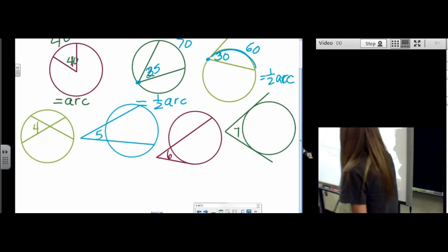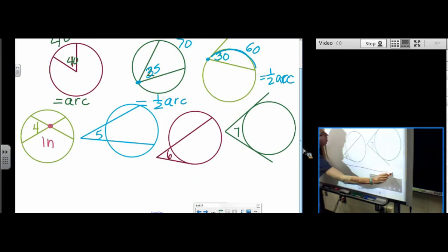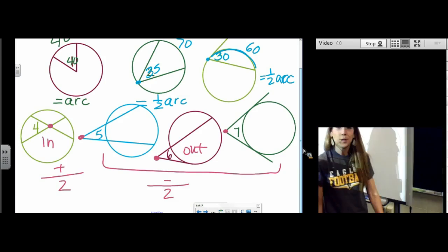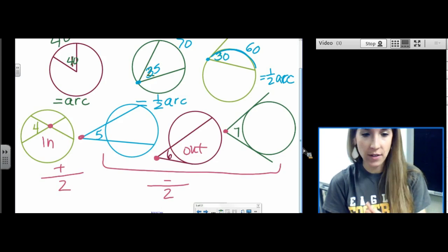Then we get down here and we look at where the vertex is. On this one, the vertex is inside and on all three of these, outside, outside, outside. So reminder, when it's inside, we're going to add our arcs and divide by two. And when the vertex is outside, we're going to subtract our arcs and divide by two. So that's a summary of every angle you could encounter in and out of a circle.